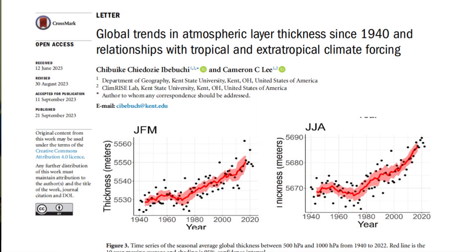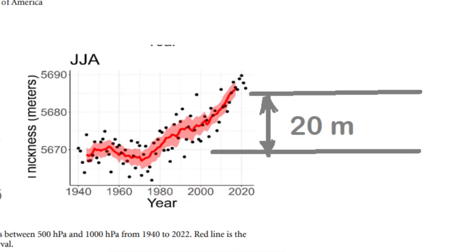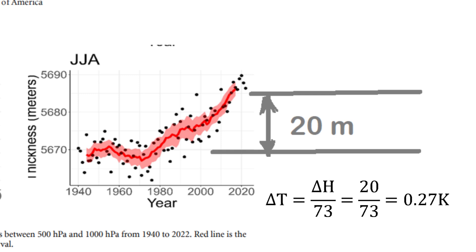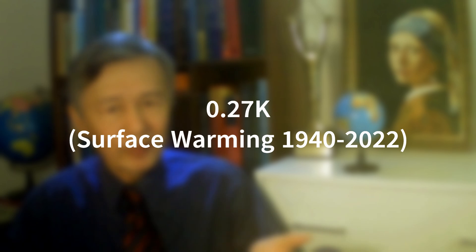These two diagrams are from a recent paper published in 2023 by Abuch and Li. Here, JFM and JJA refer to January–February–March and June–July–August respectively. They show the change in atmospheric layer thickness between 1940 and 2022. As you can see, the increase in thickness is about 20 meters. Using my new equation, the implied increase in surface temperature is about 20 divided by 73, which is just about 0.27 Kelvin — or 0.27 degrees Celsius — far from the claimed 1.5 Kelvin.